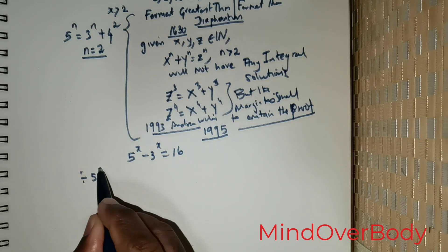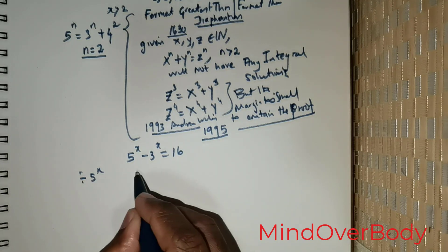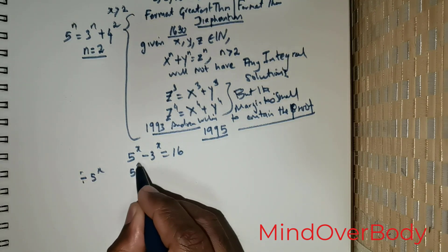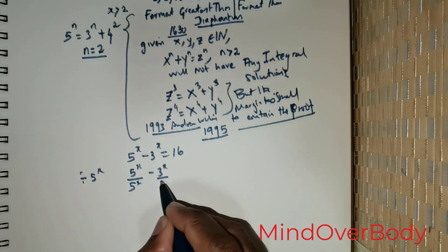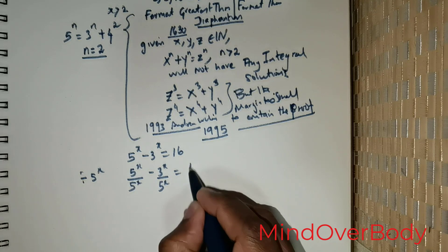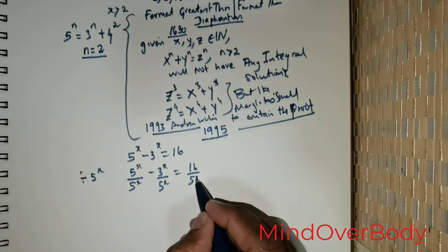Over 5^x, I can rewrite this as 1 - (3^x / 5^x) = 16 / 5^x.